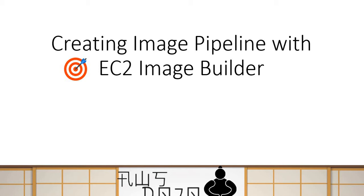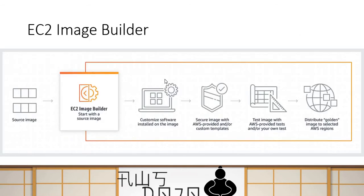EC2 Image Builder is used to create image pipelines in AWS. You can build a pipeline to customize your image and distribute it to your end users. You always start with a source image, then create a pipeline where you write the customizations you want. At the end you can test your image, and finally your target image is distributed to AWS regions for your end users to consume.